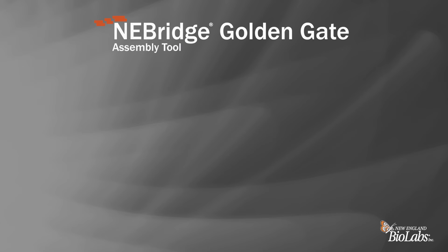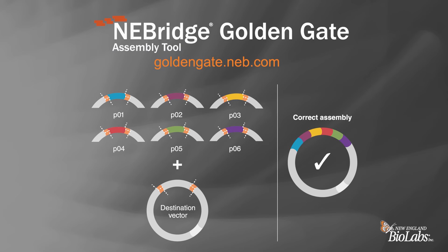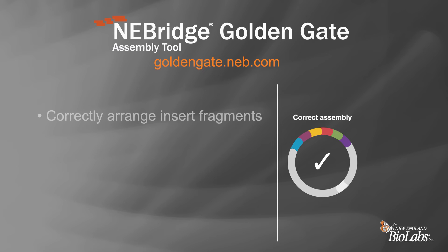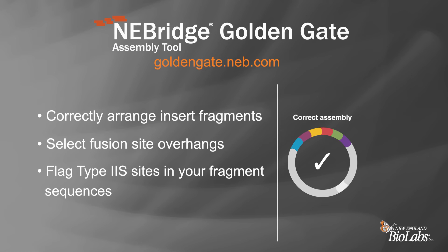The NEBridge Golden Gate Assembly Tool, found at goldengate.neb.com, simplifies in-silico DNA construct design. We recommend using this tool to visualize your assembly designs and confirm the desired final sequence. The Golden Gate Assembly Tool is used to arrange the insert fragments in the correct order, select fusion site overhangs, and also flag any Type 2S recognition sites within your fragment sequences for the enzyme used in your design.